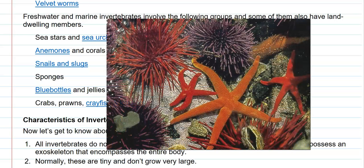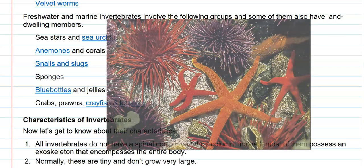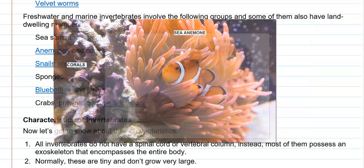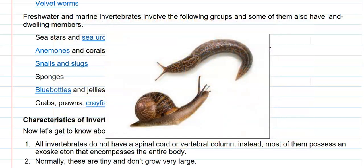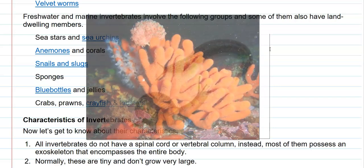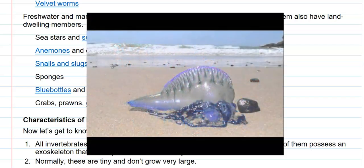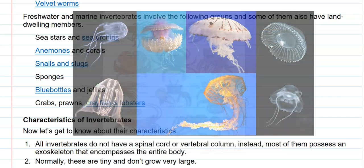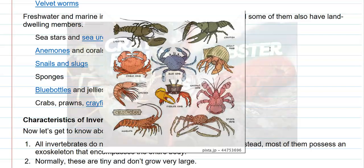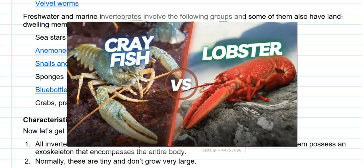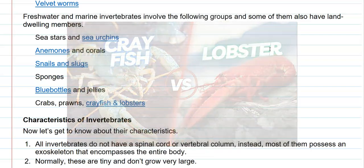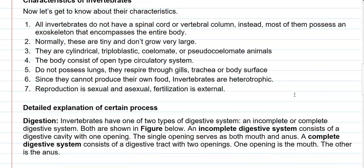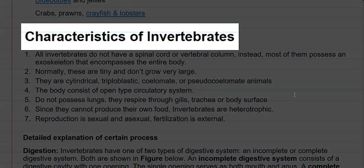Freshwater and marine invertebrates include sea stars and sea urchins, sea anemones and corals, snails and slugs, sponges, blue bottles and jellies, crabs, prawns, crayfish, and lobsters. Now we look at the characteristic features of invertebrates.